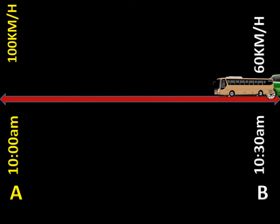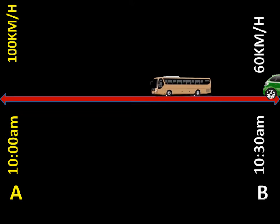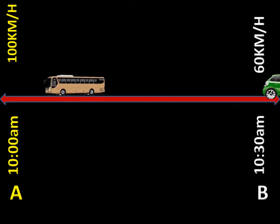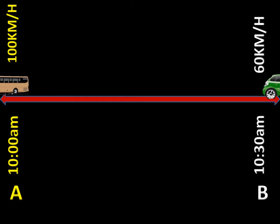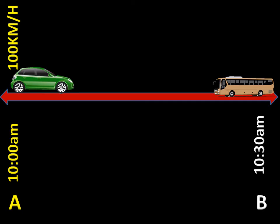So the car is moving towards B and the bus, which is moving at 60 kilometers per hour, is moving to town A. The car started its journey at 10 a.m. earlier than the bus, and its speed is 100 kilometers per hour. Note that the bus started at 10:30 and the car started at 10 a.m., meaning at 10 a.m. the car was already moving.